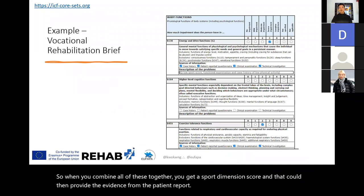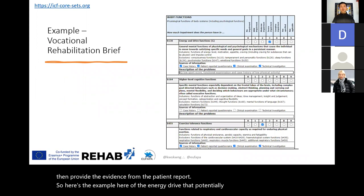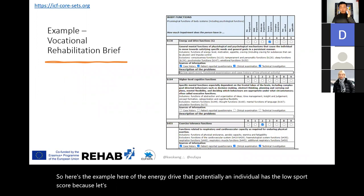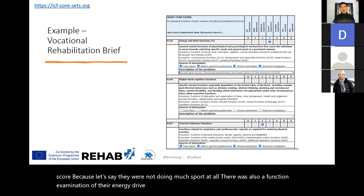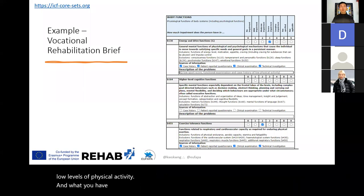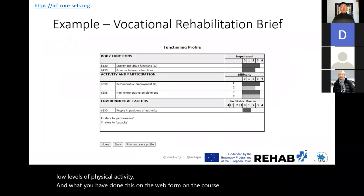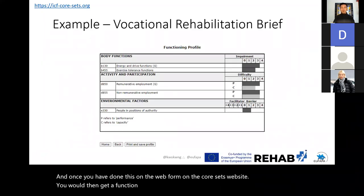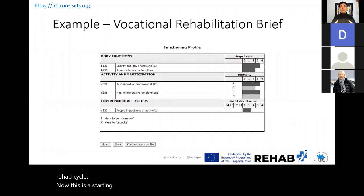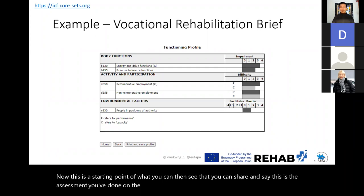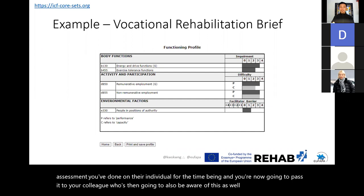Here's an example: an individual may have a low sport score because they were not doing much sport at all, with a function examination of energy drive and a case history of low levels of physical activity. Once you've done this on the web form on the core sets website, you then get a function profile — a simplified version of what you saw earlier under the rehab cycle. This is a starting point you can share with your colleague and also give to the patient themselves.